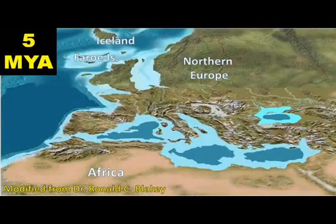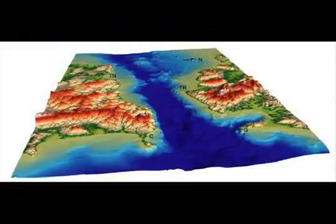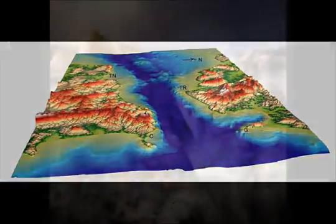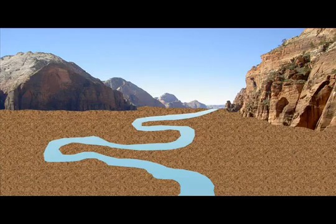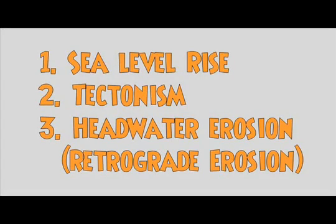By about five million years ago, the connection between the Atlantic and Mediterranean at Gibraltar became permanently re-established. The spectacular coastal canyons, formed by rivers flowing into the Mediterranean Basin, became embayments, and gradually these were buried beneath silt and sand. Perhaps the only remaining question is what event took place that permanently re-established the connection between the Atlantic and the Mediterranean. The three prime candidates are sea level rise, tectonic activity, and headwater or retrograde erosion — and perhaps I should point out that there's nothing that precludes the event being the result of all three in combination.